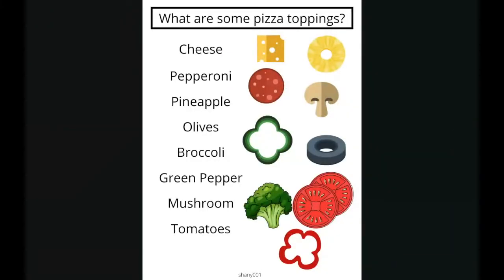So here are some examples of toppings. We have cheese right here. We have pepperoni right over here. We have pineapple right there. Olives, my favorite right here. Broccoli right over here. Green pepper right here. Mushroom. And finally tomatoes. I also added red pepper as well.